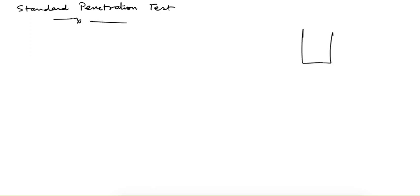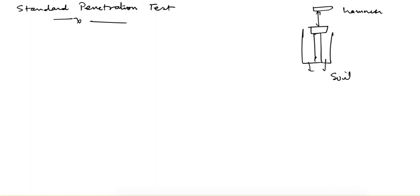In the Standard Penetration Test, we first dig a borehole and use a split spoon sampler with a penetrometer assembly. We then apply impact loading using a hammer. Because of this impact loading, the assembly tries to penetrate the soil, and the soil shows resistance to this penetration.